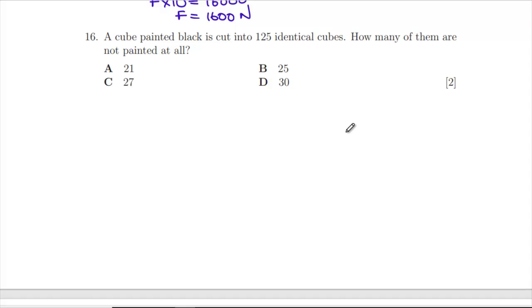All right, these are going very nicely. A cube painted black is cut into 125 identical cubes. How many are not painted at all? We've got this cube, we painted the outside. When we split it up, we're taking the outer layer off all the way around, leaving a smaller cube in the middle which is one in on each side. We're going to have a 3-cubed cube in the middle of this 5-cubed cube, so we must have 27 that aren't touching the outside. That was quite straightforward.